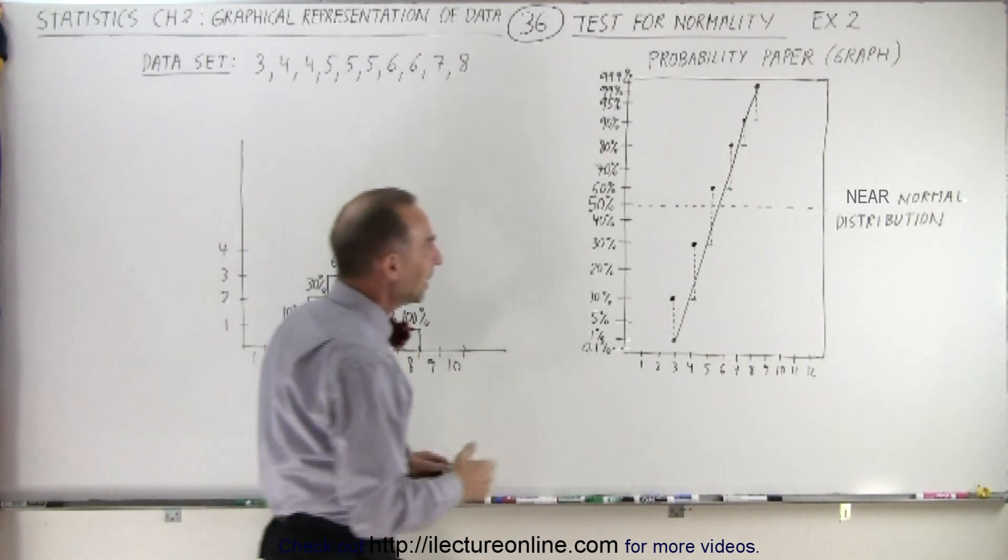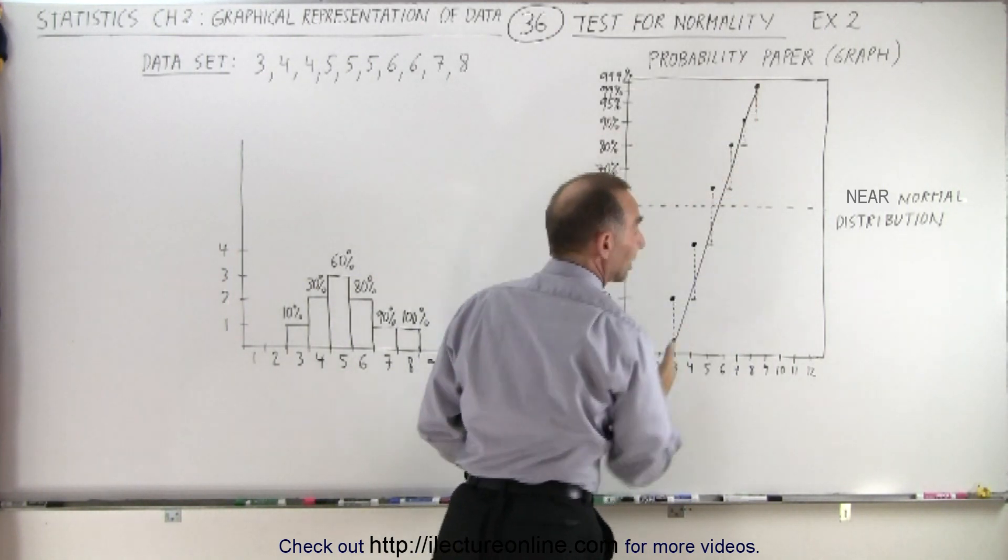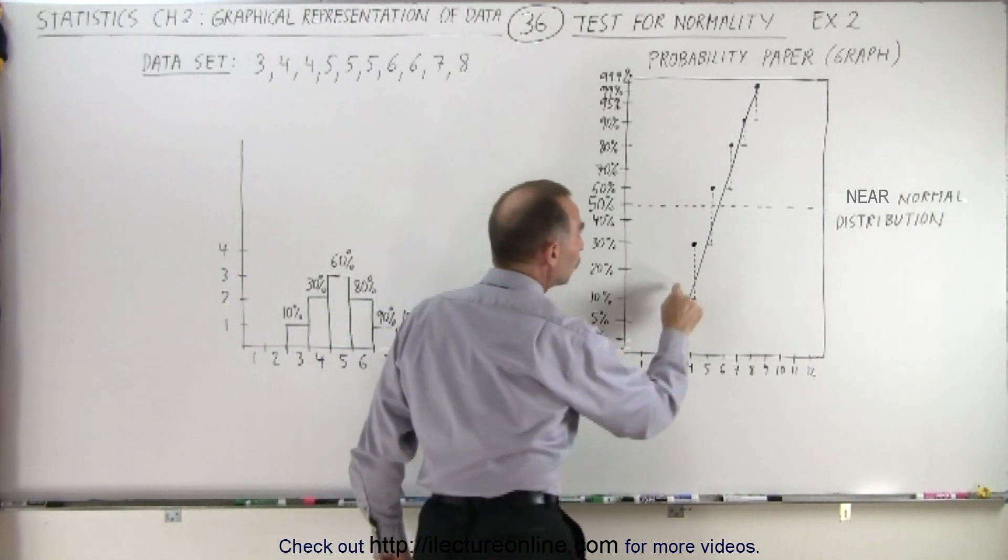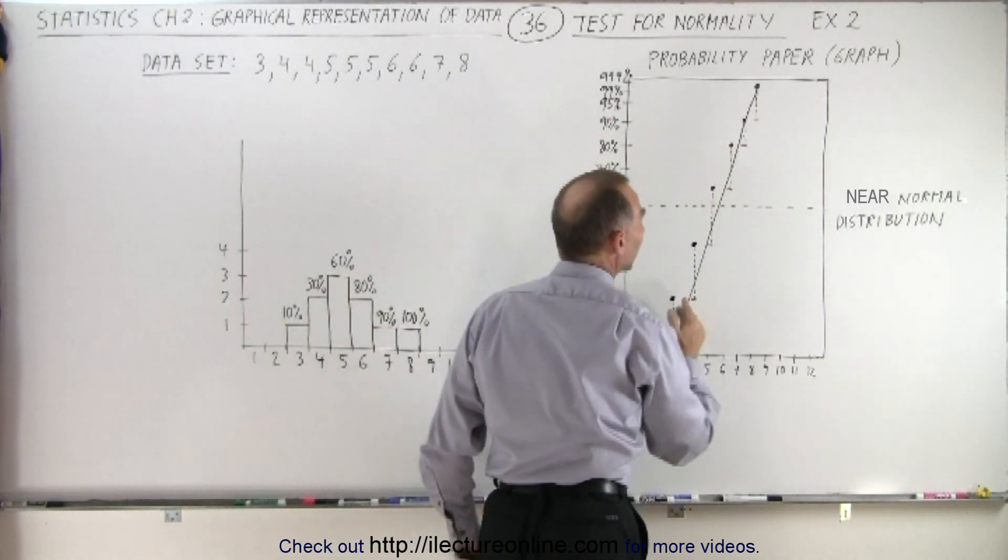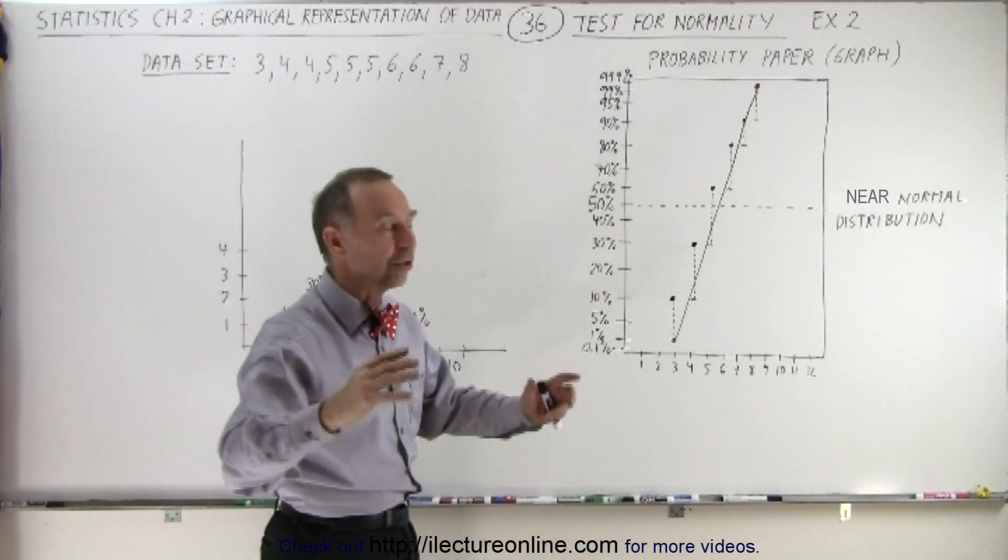Then you notice that in many cases the range goes right across that straight line. This means you're very close to a normal distribution—the points do not deviate very far from the line.